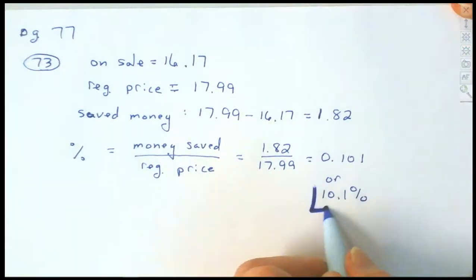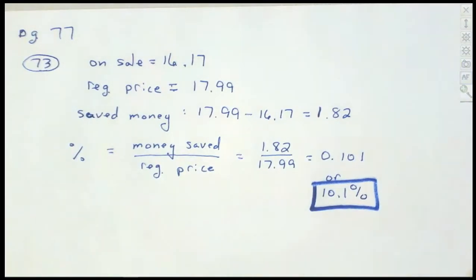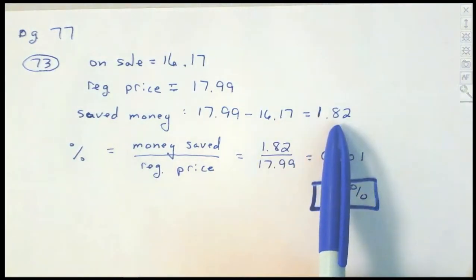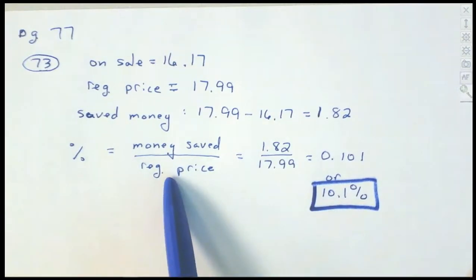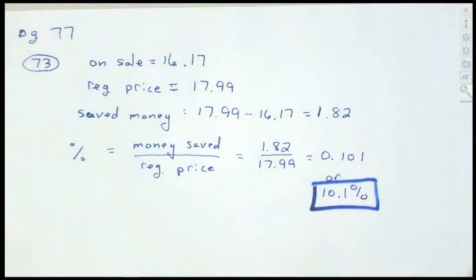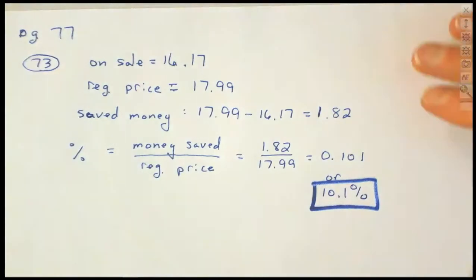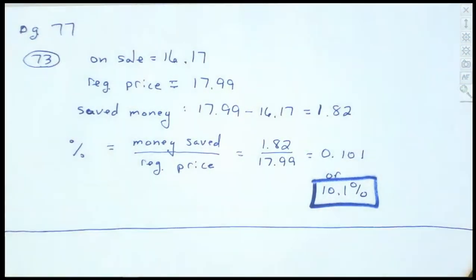We saved 10.1% when we bought that DVD on sale. To summarize: take the sale price and regular price, subtract them to get money saved, then divide money saved by the full retail price. Round to three places for the nearest tenth of a percent, and write it as a percentage. We saved $1.82, which is 10.1%.